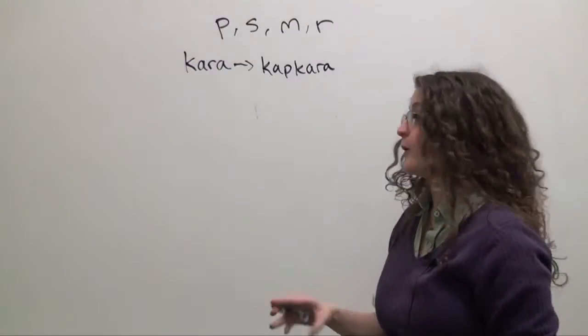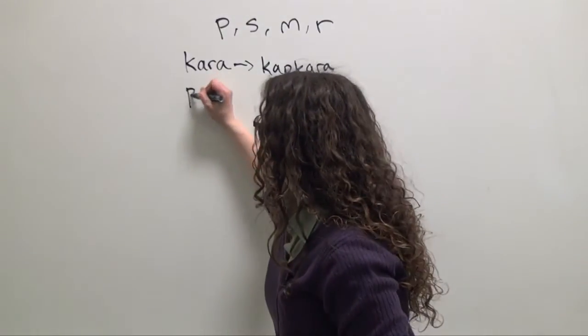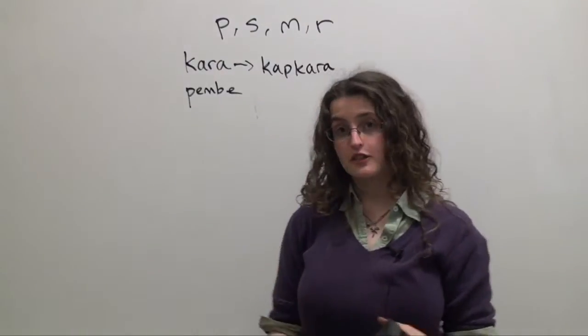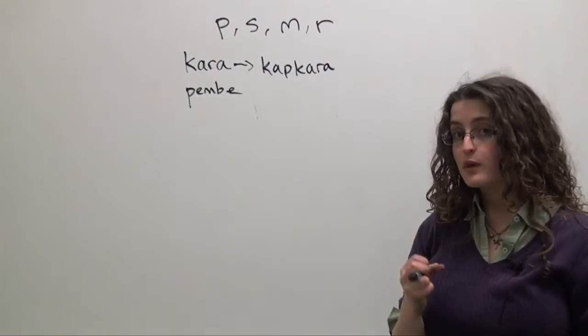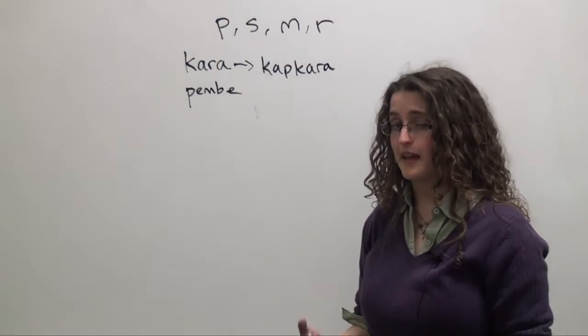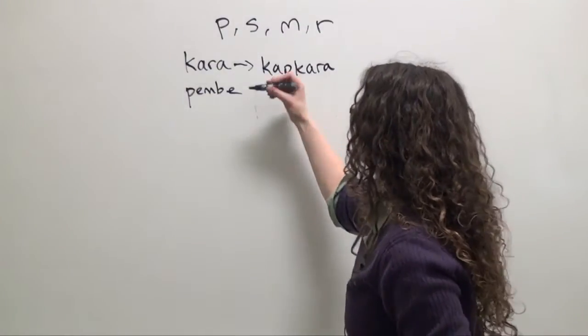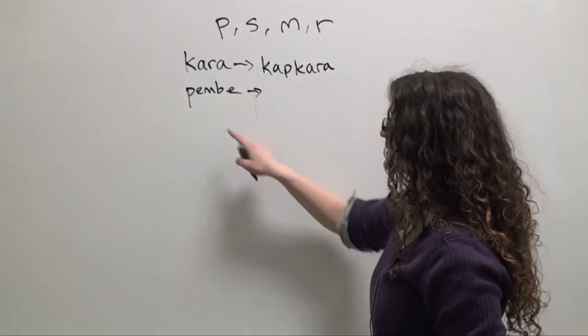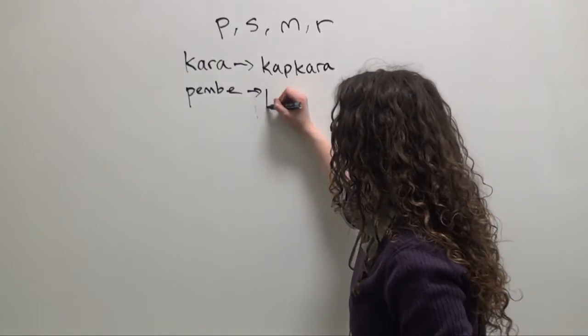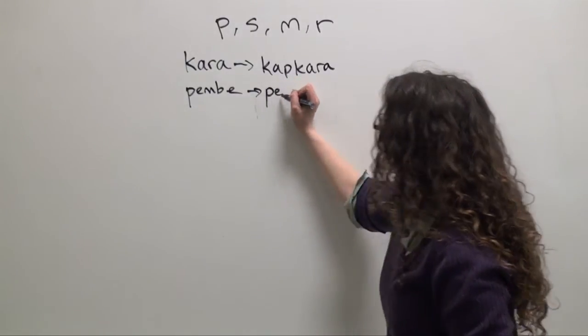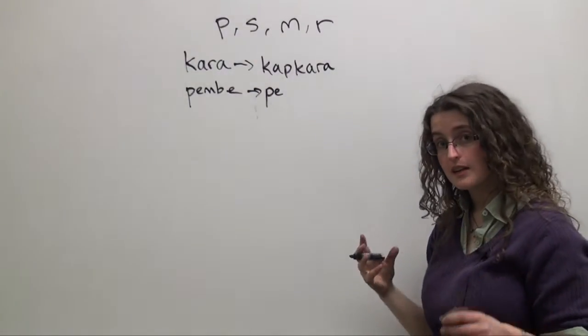Let's look at another example. Pembe is a Turkish adjective meaning pink. If we want to say extremely pink, rose pink, super pink, we can repeat the first syllable of pembe and add one of these four consonants.